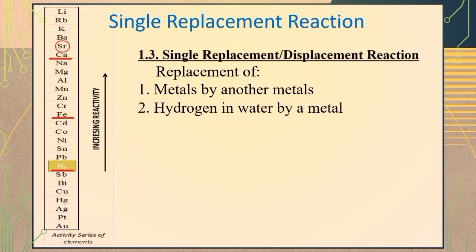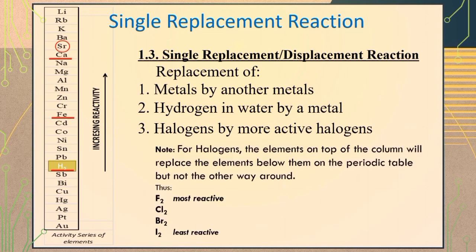A non-metal can also replace another non-metal in a compound like the replacement of halogens by more active halogens. Here, the elements on top of the column will replace the elements below them on the periodic table but not the other way around. Thus, fluorine is the most reactive while iodine is the least reactive.